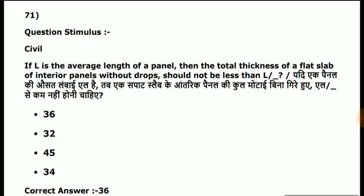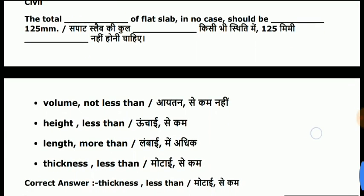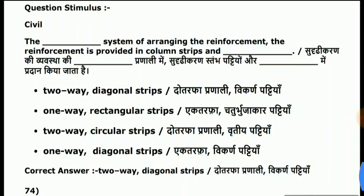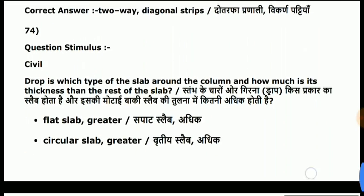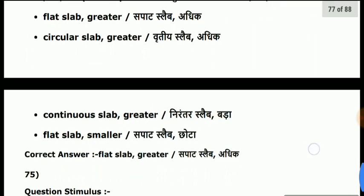Question 71: if L is the average length of a panel then the total thickness of a flat slab of an interior panel without drops should not be less than L/36. Question 72: the total thickness of the flat slab should not be less than a minimum value. Question 73: the answer is two-way system of arranging reinforcement provided in column strips and diagonal strips. Question 74: a drop is a flat slab around the column and its thickness is greater than the rest of the slab.